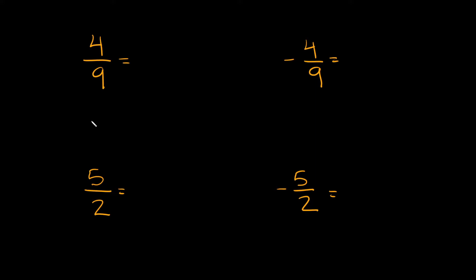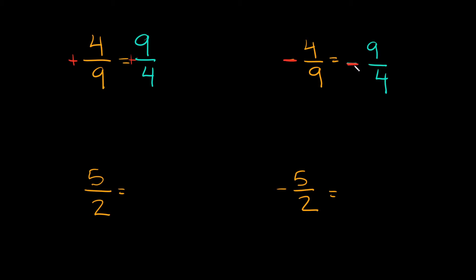4 over 9 — what would the reciprocal of 4 over 9 be? Well, whenever you're trying to find the reciprocal of a fraction, you literally just flip it. So 4 over 9 would just be 9 over 4. Now, what about negative 4 over 9? That would be negative 9 over 4. One thing I want to point out: if it's positive, keep it positive. If it's negative, keep it negative. So these were a couple proper fraction examples.